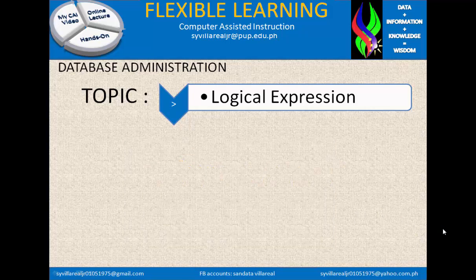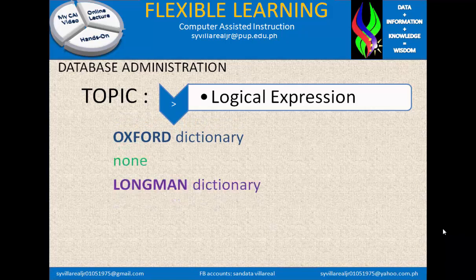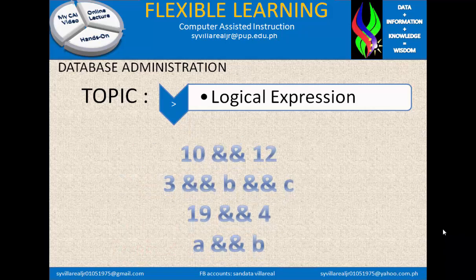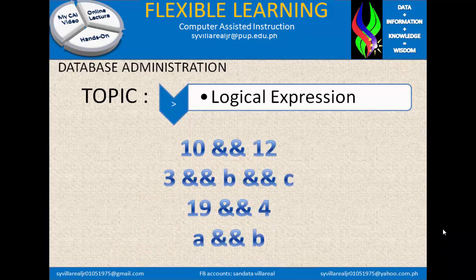What is AND? In Oxford, Longman, and Merriam Dictionary, there is no standard English meaning. Here is an example of AND: 10 AND 12. 3 AND B AND C. 19 AND 4. And A AND B. This is answerable by true or false — the same as with relational expressions.